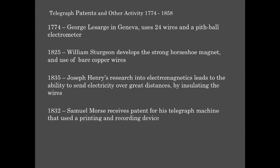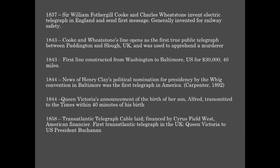In 1832, Samuel Morse received a patent for his telegraph machine that used a printing and recording device. In 1836, Morse code was invented for use with the telegraph. In 1837, Sir William Fothergill Cooke and Charles Wheatstone invented the electric telegraph in England and sent the first message, generally invented for railway safety.